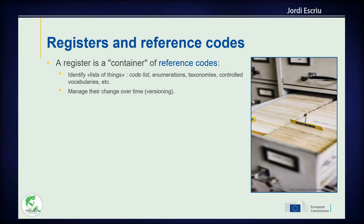What is a registry? A registry is a container or reference code. The idea is to identify a list of things. This list could include codelists, enumerations — the difference being that codelists are extensible and enumerations are not — as well as taxonomies, controlled vocabularies, glossaries, and so on. The idea is to manage the changes of these items over time. This is the concept of versioning, so that you are able to reference any of the versions of these items and check the differences registered between them.